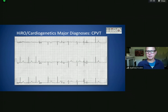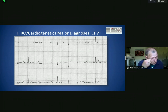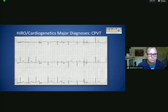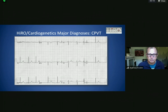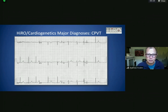CPVT — catecholaminergic polymorphic ventricular tachycardia — is another condition we see. The resting ECG in CPVT is normal, which is one of its key traits. A normal ECG doesn't rule out a genetic condition — it could mean the patient has CPVT. The hallmark signature of CPVT is during clinical events: a classic bidirectional ventricular tachycardia. But the baseline ECG itself has no trademark findings.